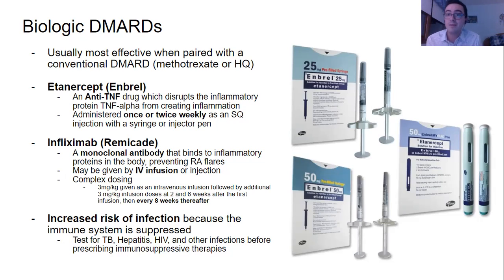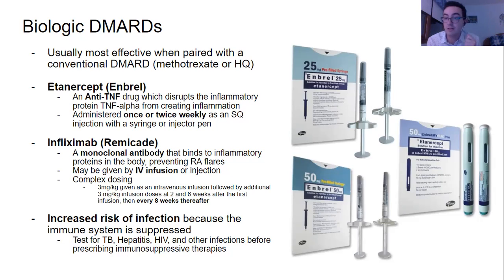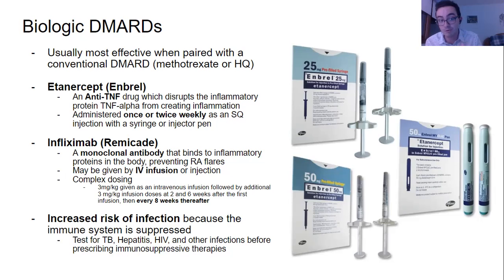As with methotrexate and all immunosuppressing drugs, there is an increased risk of infection because the immune system is being suppressed. It's critically important to test patients for tuberculosis, hepatitis, HIV, and other infections before prescribing any immunosuppressive therapies, including Enbrel or Remicade. That just about sums up rheumatoid arthritis — feel free to ask any questions. Thank you.